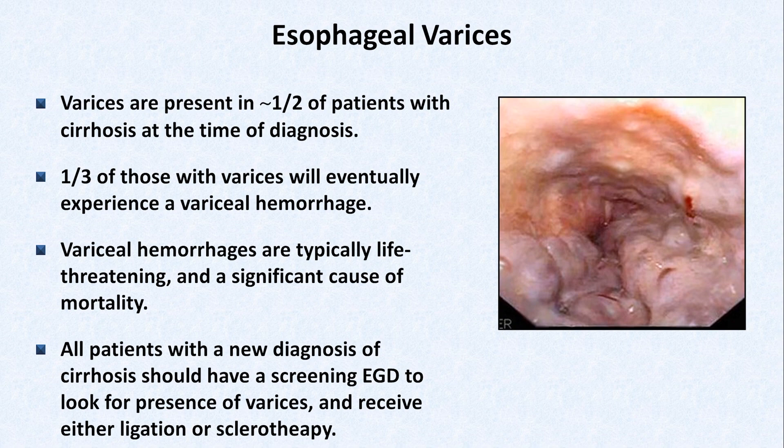Options for endoscopic treatment include variceal ligation, also known as banding, in which rubber bands are placed around each varix, resulting in the varix thrombosing off. Another option is sclerotherapy, in which a sclerosing solution is injected into the varix. In general, ligation is the preferred option.